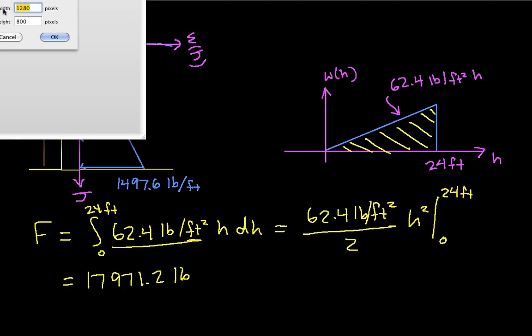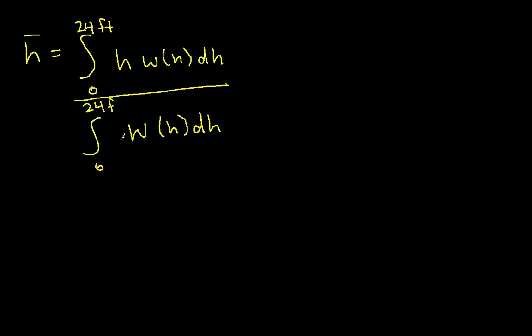Let's see if we can find h bar. To do this, I'm going to create a whole new workspace. The formula for finding this is the integral from 0 to 24 feet of h times w of h dh over the integral from 0 to 24 feet of w of h dh. And we've already computed what this is. In our previous example, we found that this is 17,971.2 pounds. So all we need to do is evaluate this top integral.